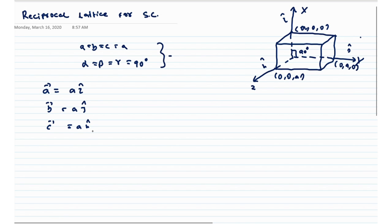Now, a star - for the a vector is given by 2π into b cross c, by a dot b cross c. Similarly, b star can be represented as 2π times c cross a, by a dot b cross c.